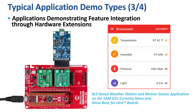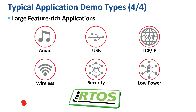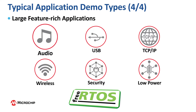For example, the BLE-based weather station and motion sensor application on the SAM D21 Curiosity Nano and NanoBase for click boards. The fourth type is large feature-rich applications involving integrating several technologies like audio,